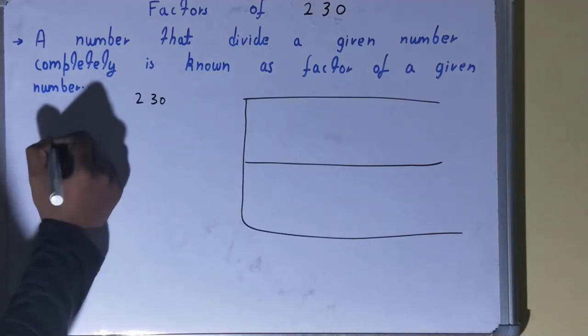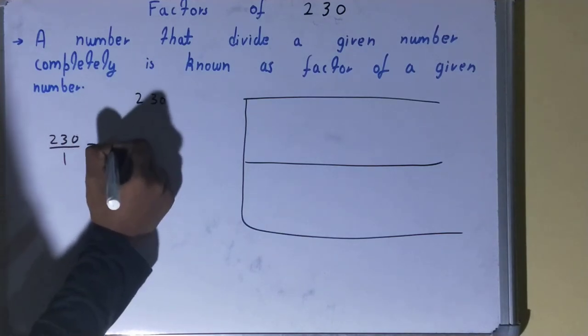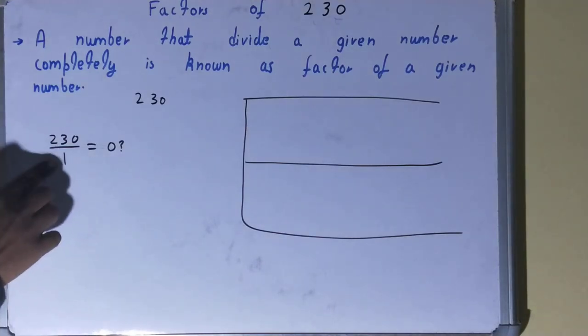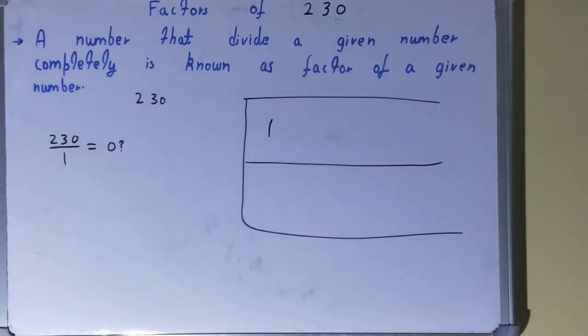number, that is 1. Divide the number 230 by 1. If you do so, will you get the remainder zero? The answer is yes. Because you will get the remainder zero, you can say 1 is the factor of 230. So 1 we can write it over here in the factor list, and